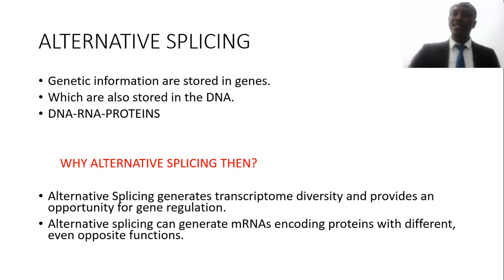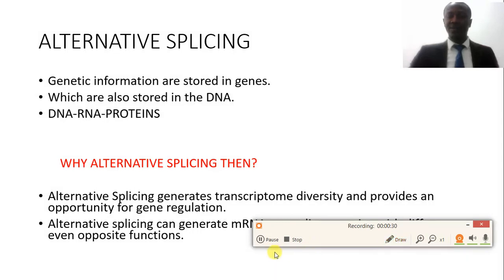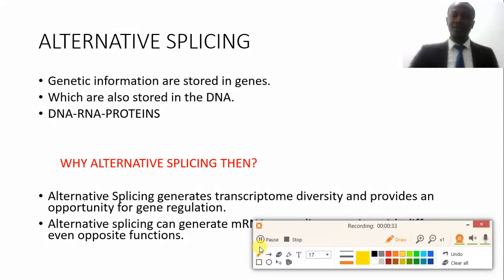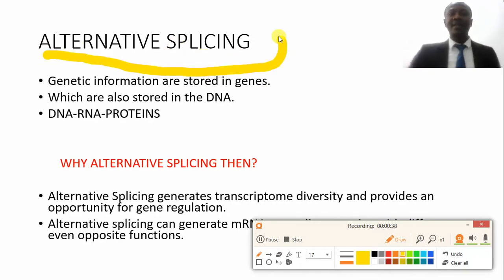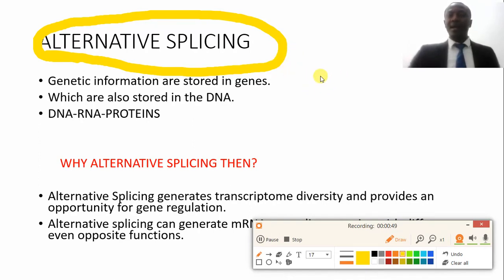Before we get into alternative splicing, let's look at some of the basic information that has a direct connection to this alternative splicing process. Alternative splicing basically deals with combinations of exons, but how do exons come about? We'll try to give some basic information on that.